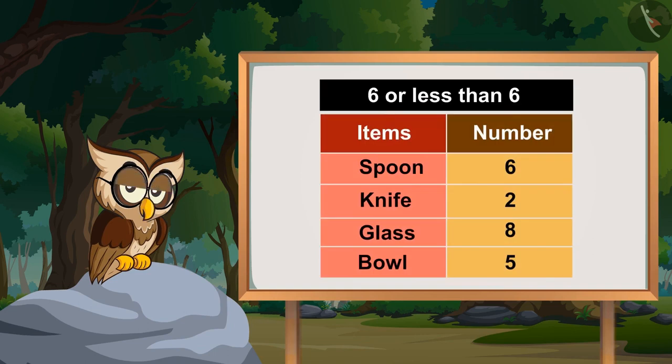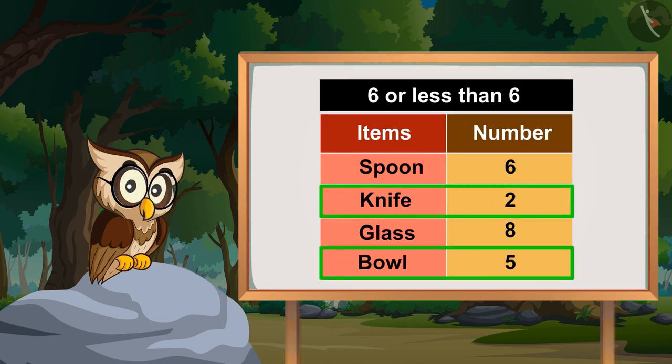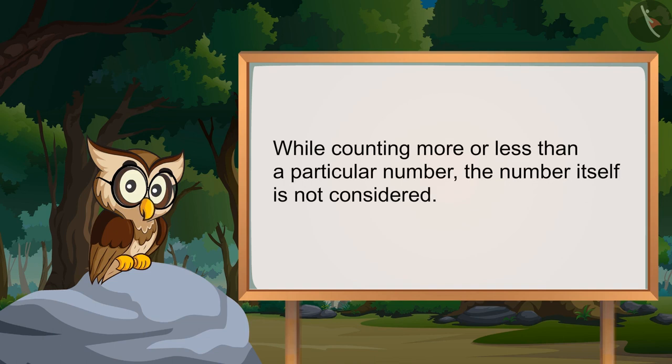Similarly, if we look at the numbers of items which are either 6 or less than 6 in the tabular form, we will get knife, bowl and spoons. So now your confusion must have been cleared. While counting more or less than a particular number, the number itself is not considered.